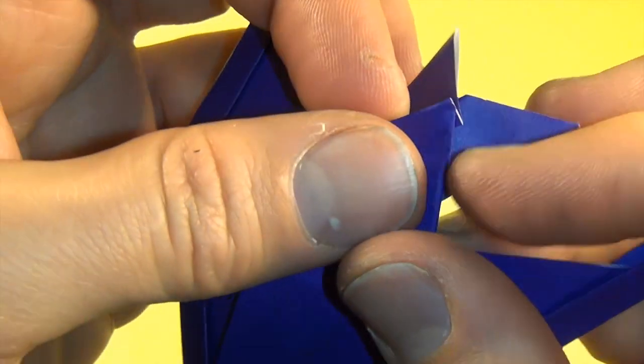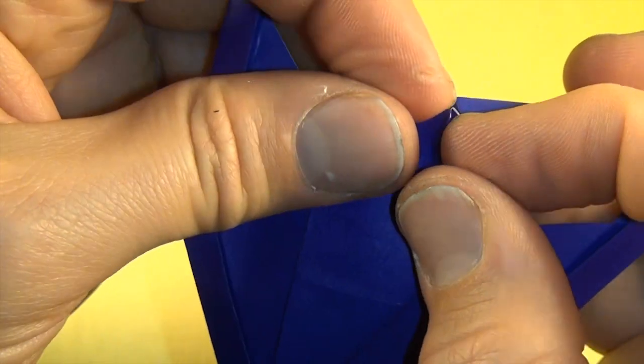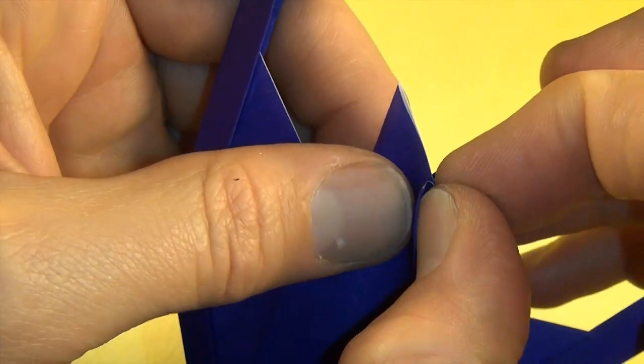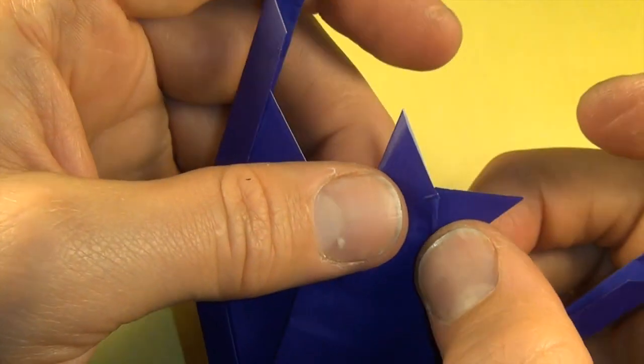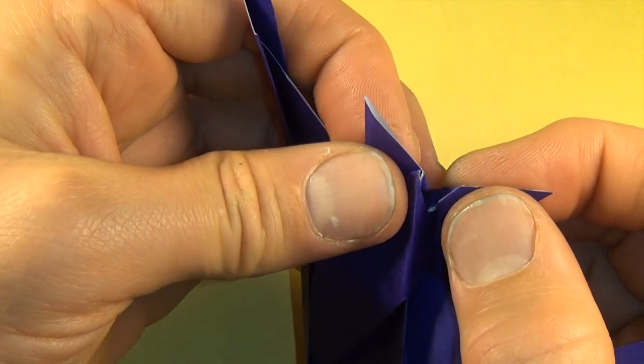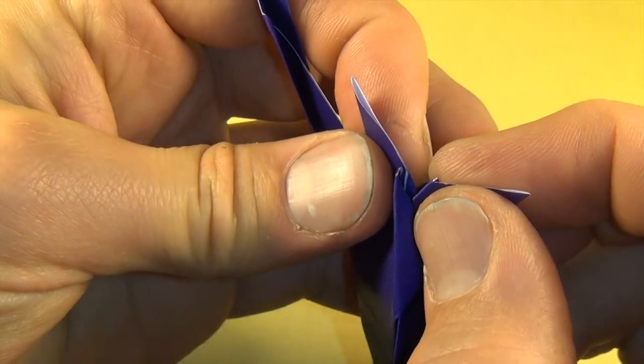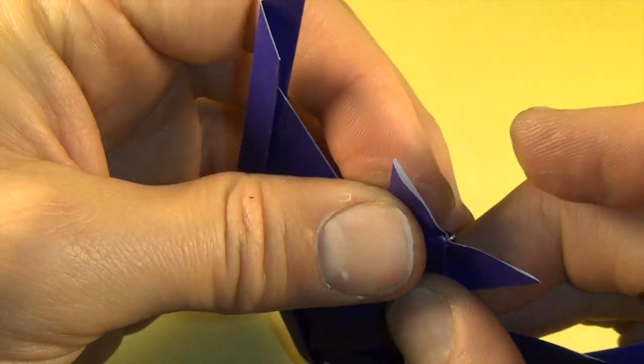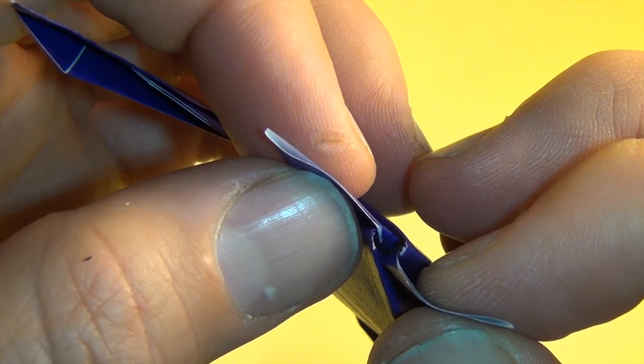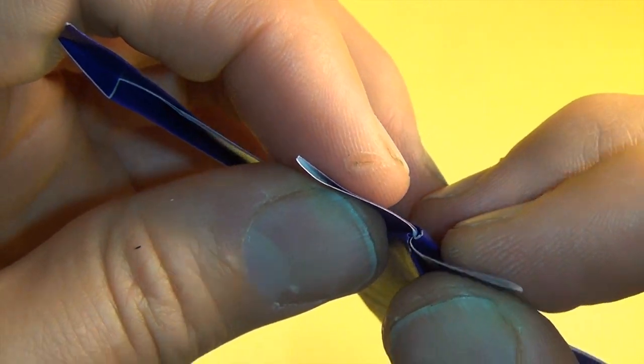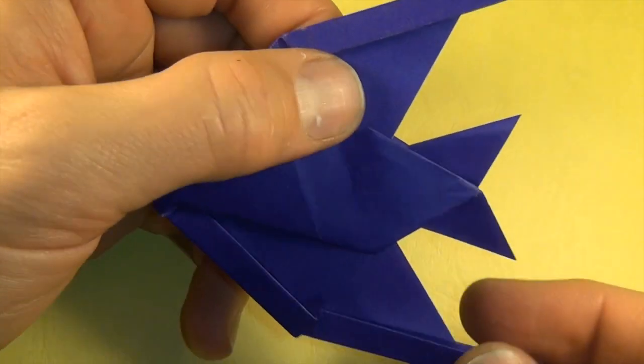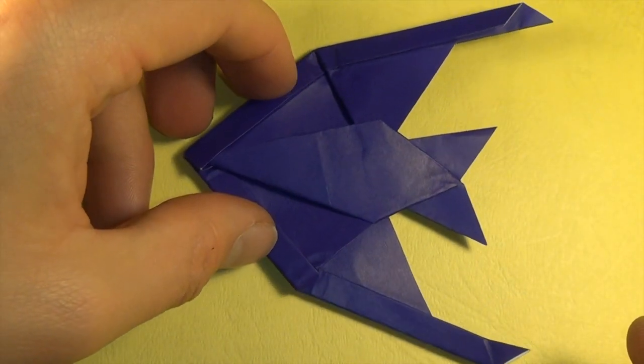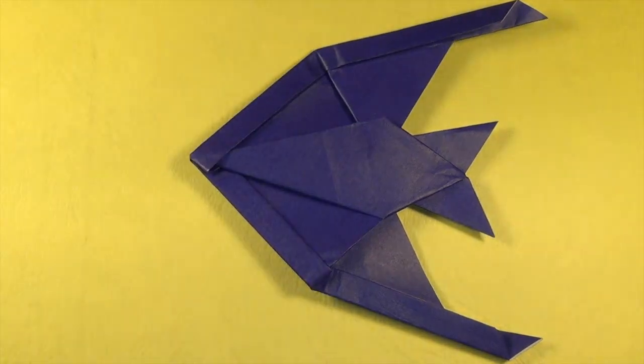And then the final lock is you just slide the flaps together. And then the little bit. And then the little lock. And then there, the angel fish.